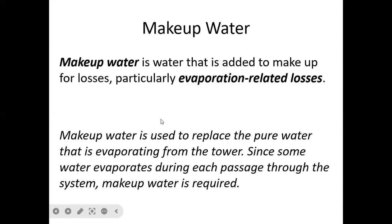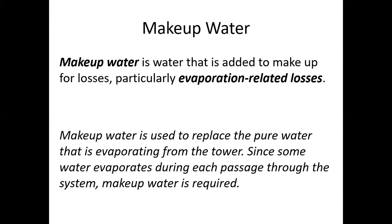Make-up water is the water added to compensate for losses, particularly evaporation-related losses. We need to monitor the level of water inside our boiler — not too high and not too low. If there is evaporation, there will be a loss of water, and we need to introduce make-up water to replace it. Make-up water is required so that our boiler will not dry up and, in the long run, overheat.